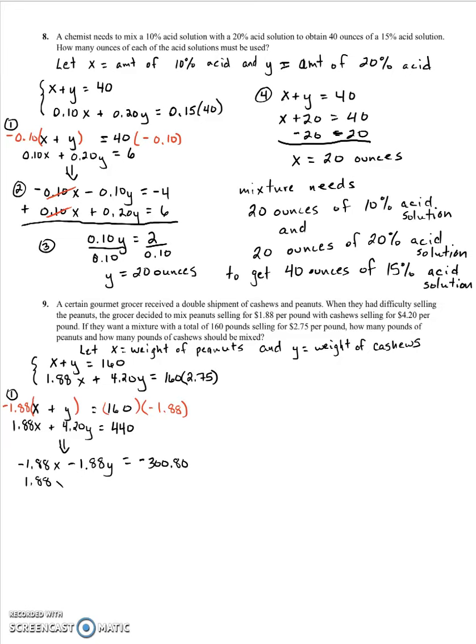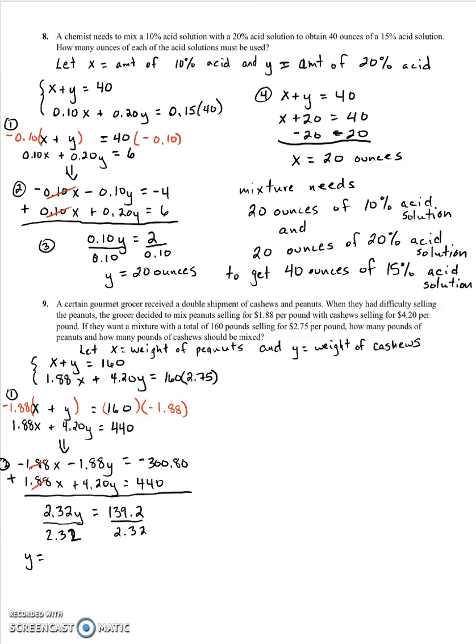We get negative 1.88X minus 1.88Y equals negative 300.80. And we just bring our other equation down unchanged. Now we're going to add these two together. So when we add them together, we get the X's cancel each other out and become 0. And we have 2.32Y equals 139.2. And so, then divide by 2.32 on both sides. And we get, we should have 60 pounds of cashews.